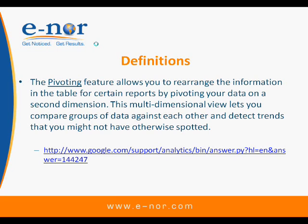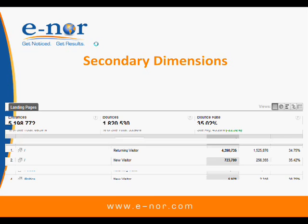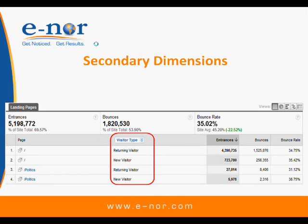You'll see the power of these two features in the next few slides, and hopefully you can use that to your advantage to make your site better. Looking at secondary dimensions, first you'll see a snapshot of a report. Say we're looking at our landing pages — two pages: the home page in rows one and two, and then my politics page.